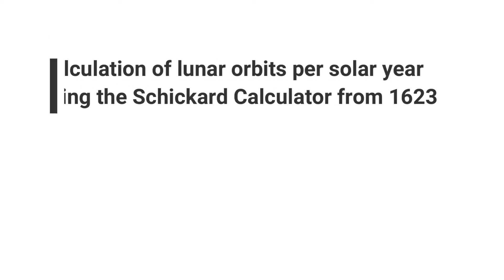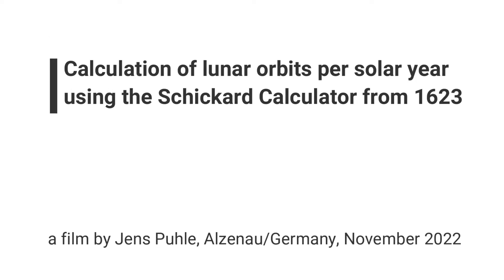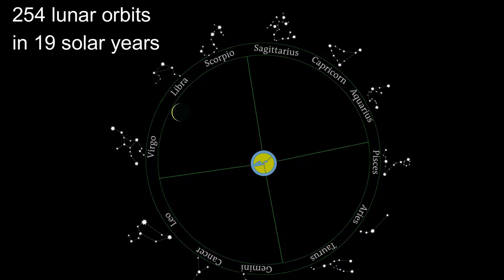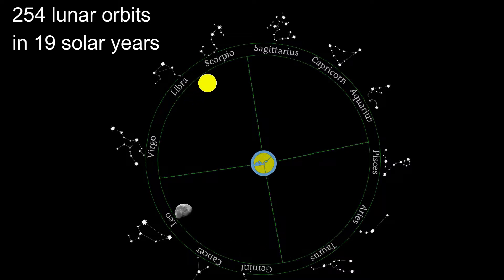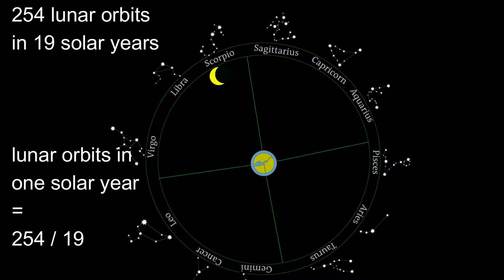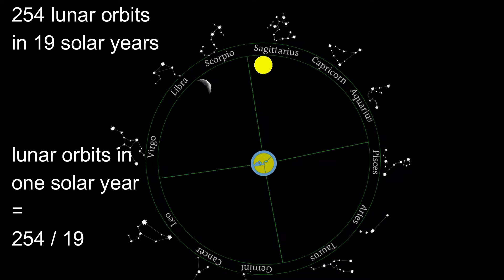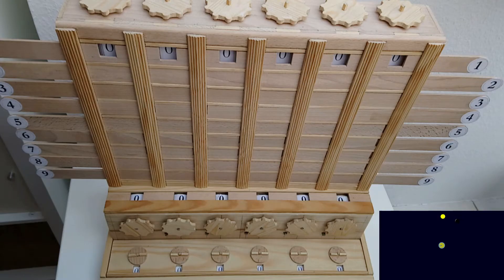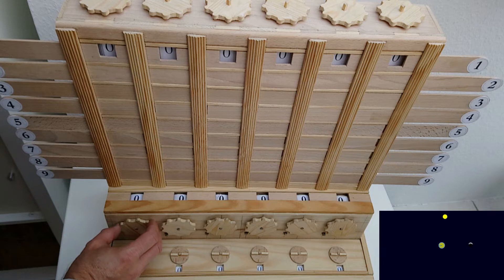In this video I am calculating the number of lunar orbits around the Earth during one solar year using the Schickert calculator from 1623. Since ancient times it is known that there are 254 lunar orbits in 19 solar years. Therefore the number of lunar orbits in one solar year equals 254 divided by 19. So let's calculate this with the Schickert machine.